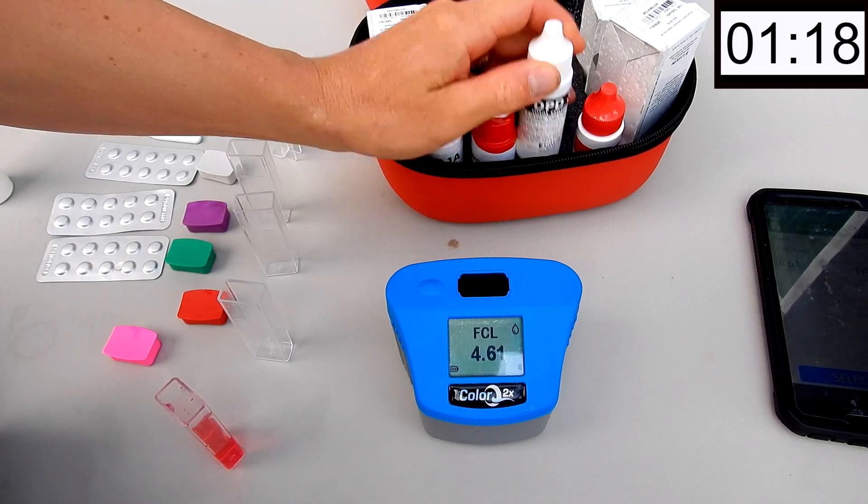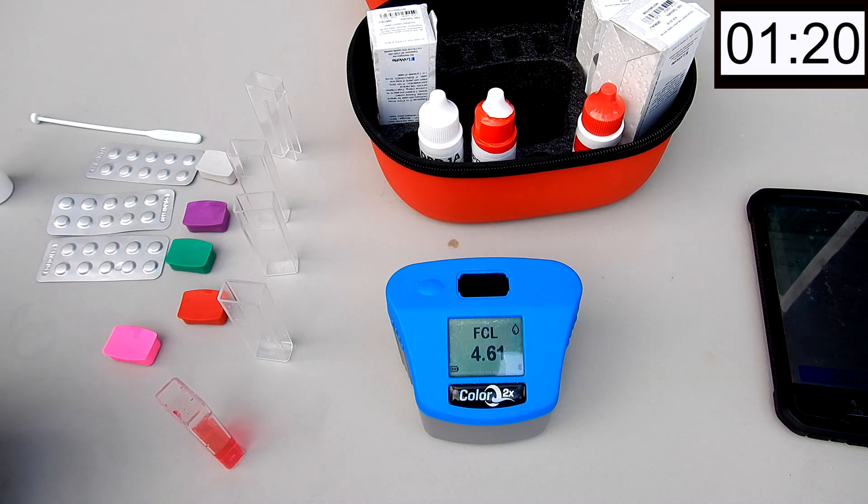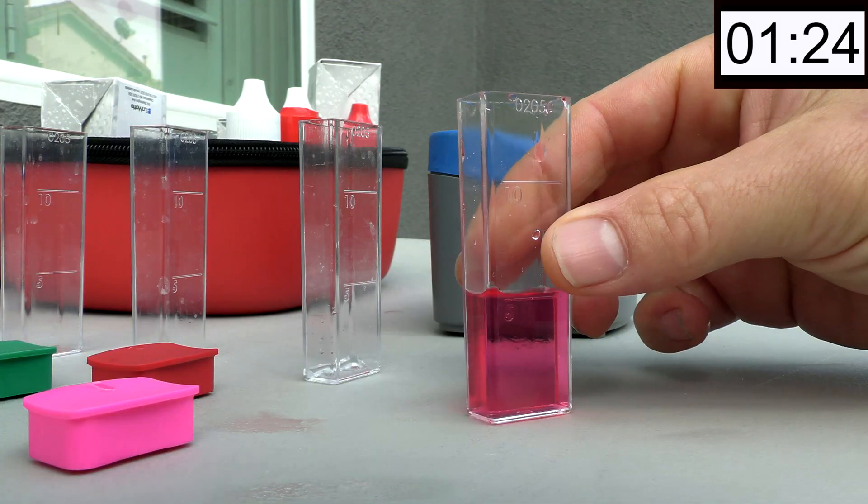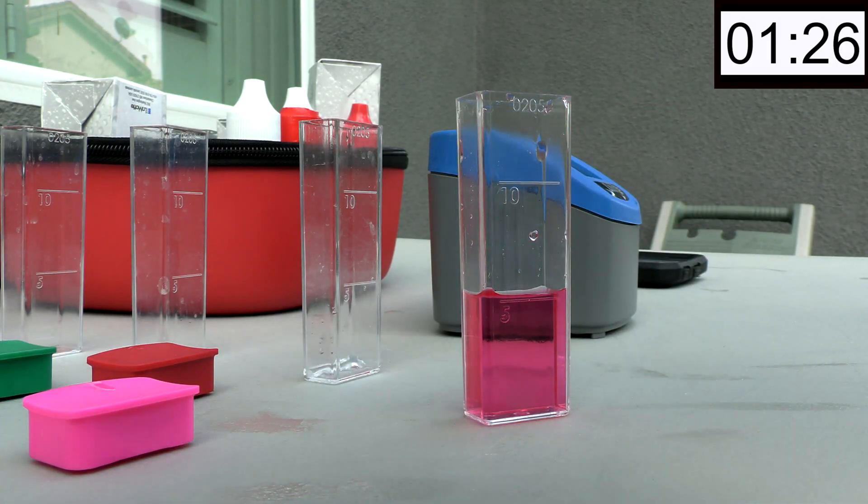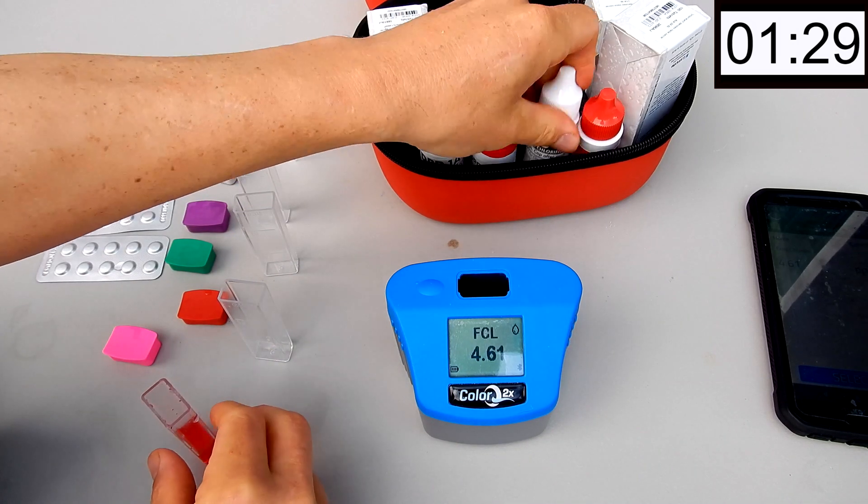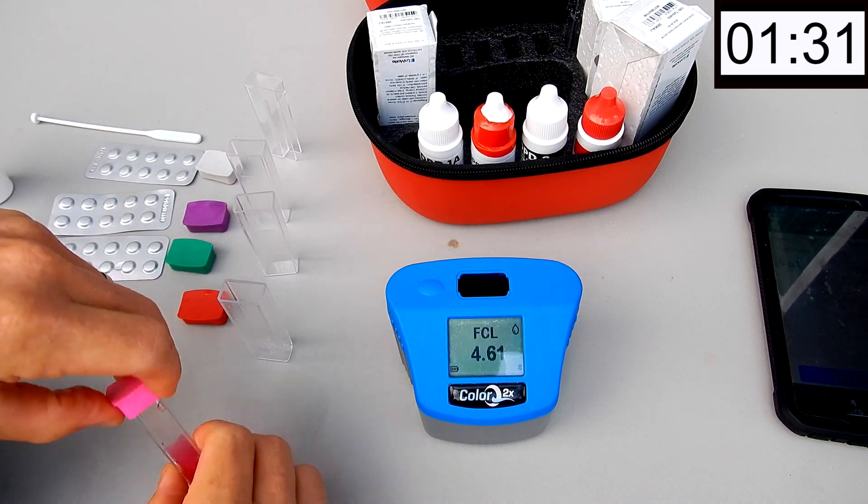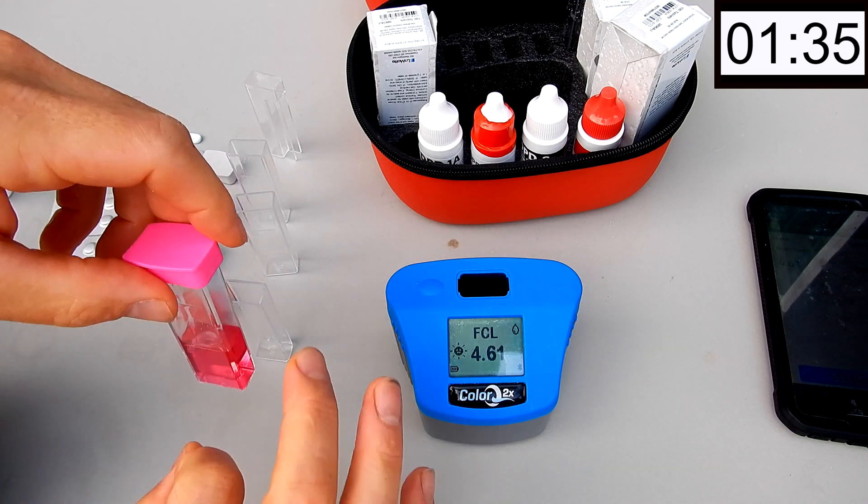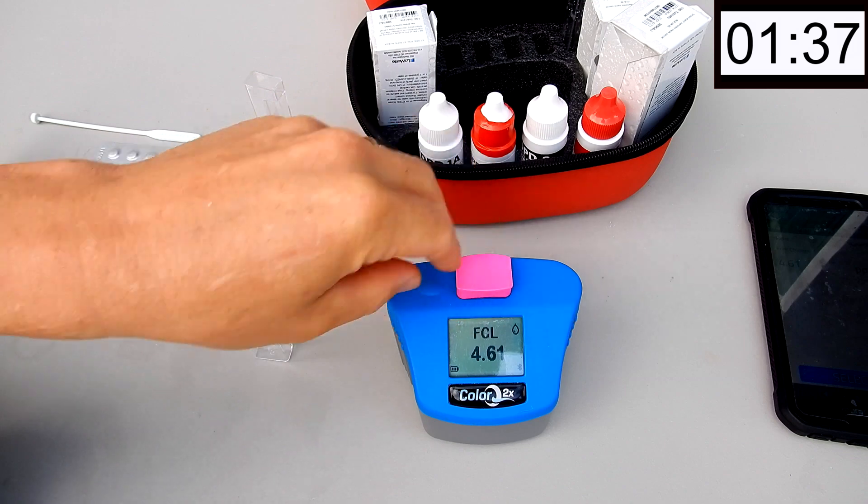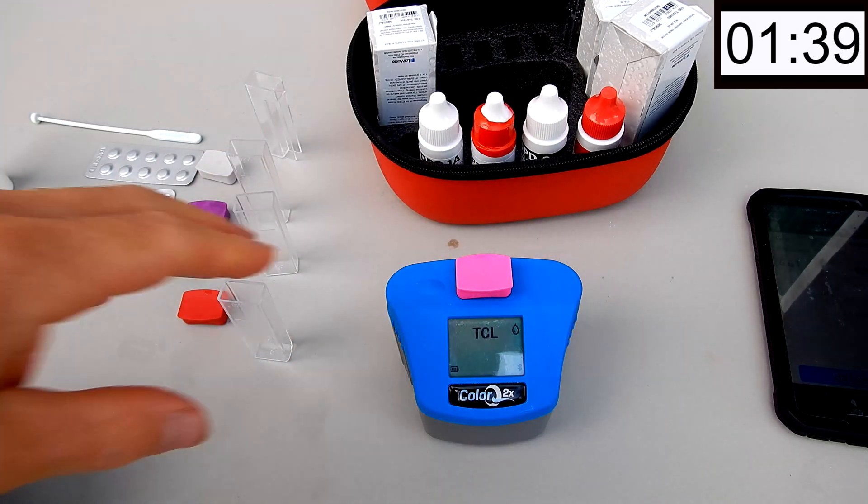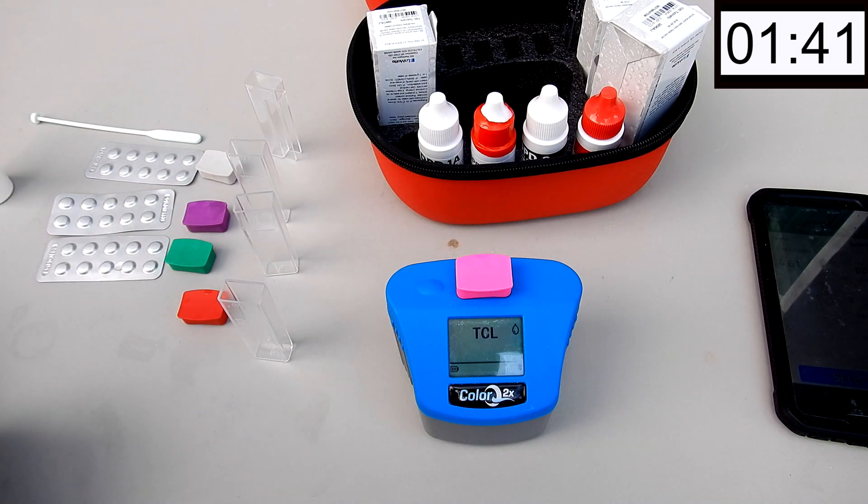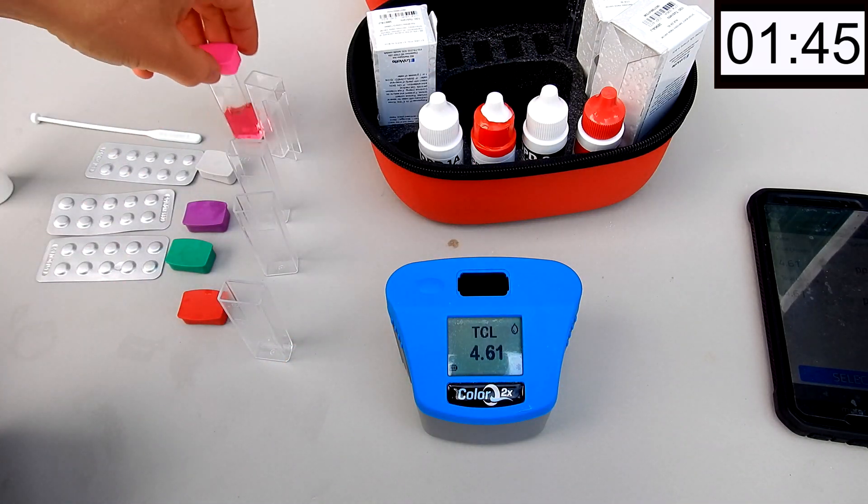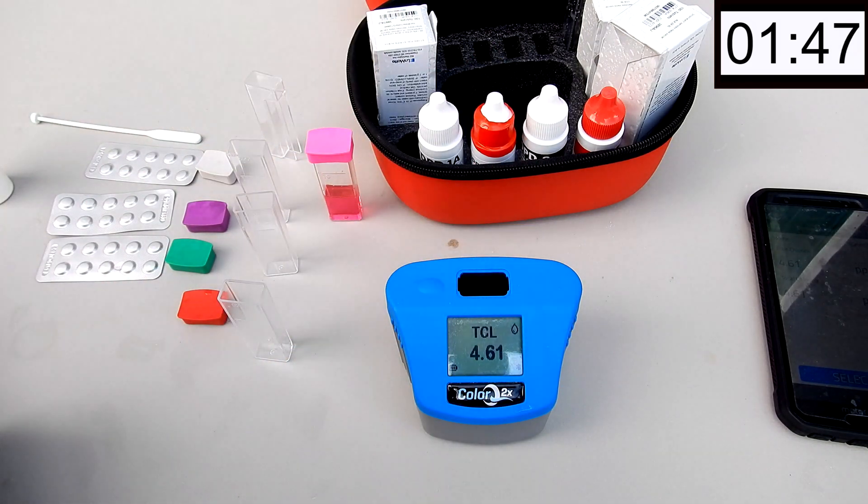Let me get the Combined Chlorine here. Then you would add 5 drops of the DPD-3. We're going to tap for the release of any air bubbles. Put that one over there.